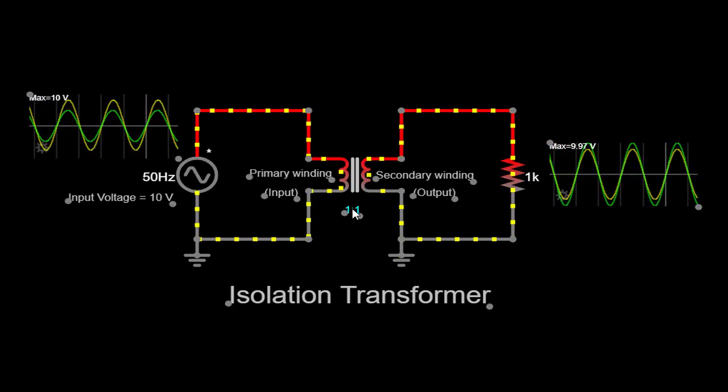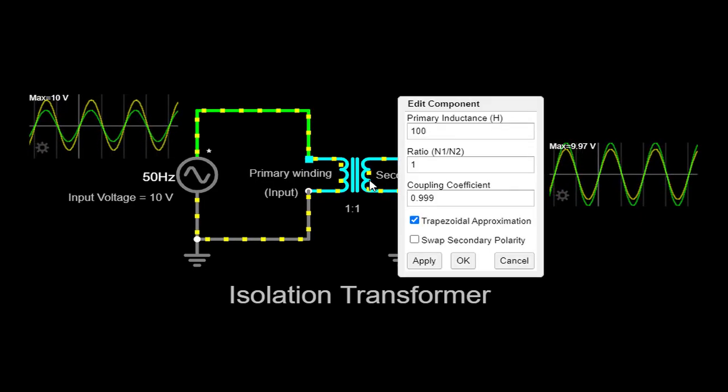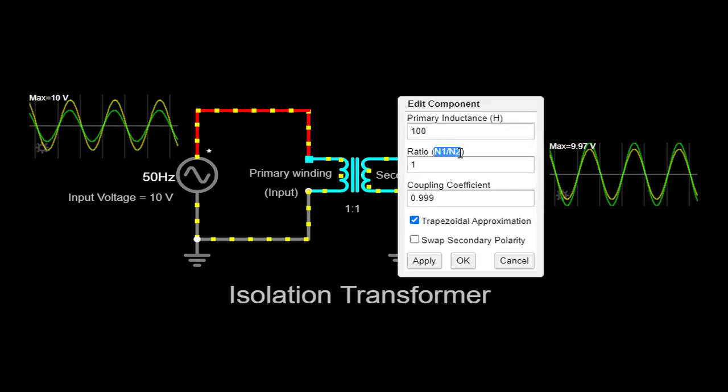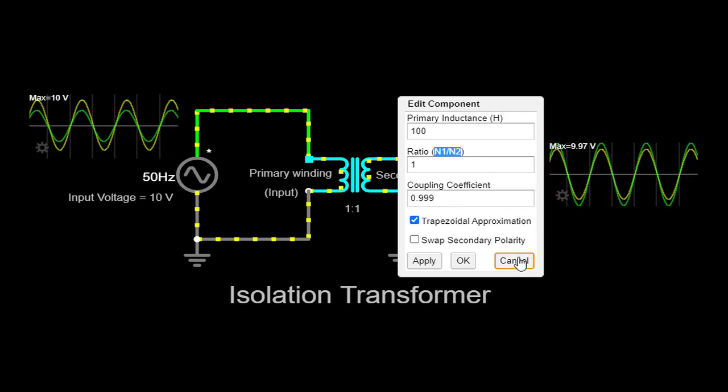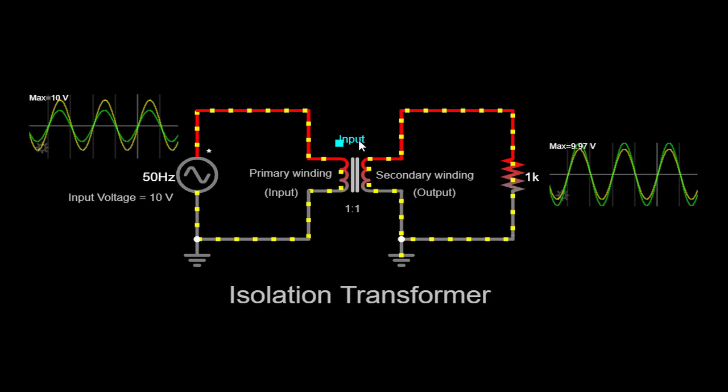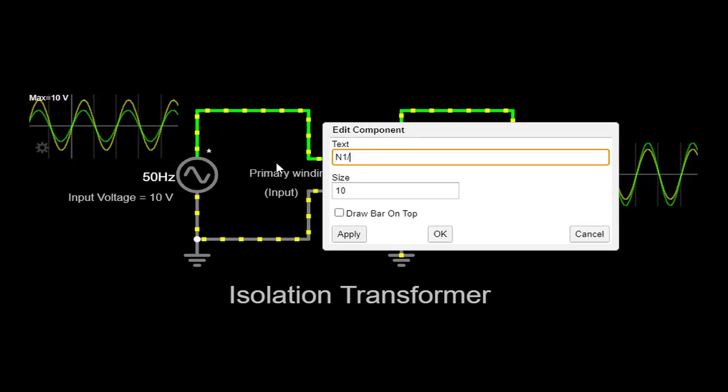Noise reduction: Isolation transformers can act as a barrier to electrical noise and interference. They attenuate common mode noise, which is noise that appears between the neutral and ground lines. By isolating the input and output circuits, they prevent the transmission of such noise and provide cleaner power to sensitive equipment.